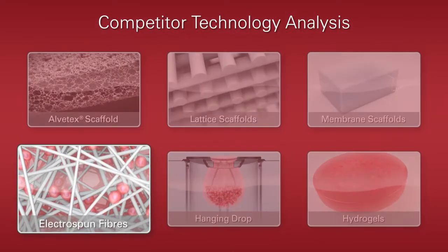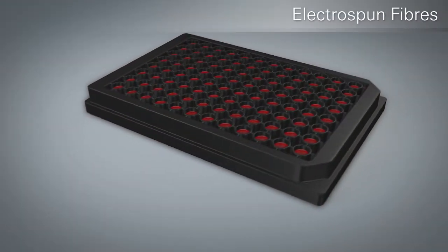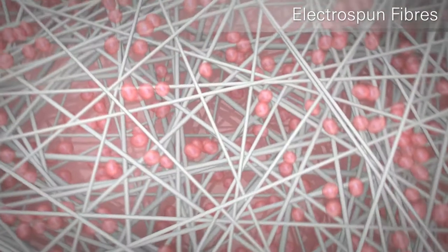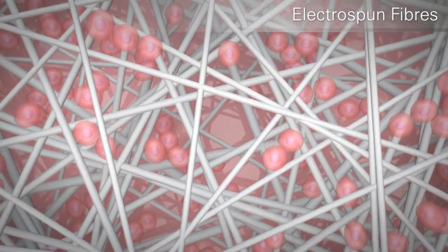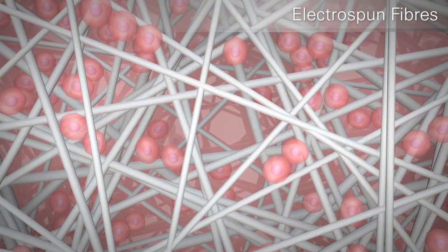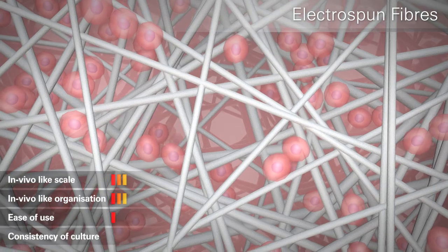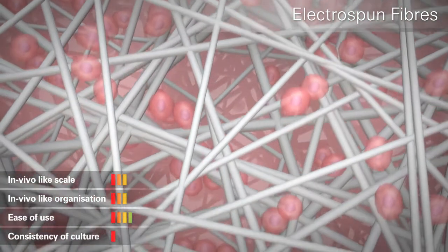Another form of scaffold is made from electrospun fibers. The drawback of this technology arises from the heterogeneous nature of the overlapping fibers. The variation in the size of the voids between fibers permits some 3D cell growth around the nodes where fibers overlap, but cells are unable to populate the larger voids, affecting a failure of organization.